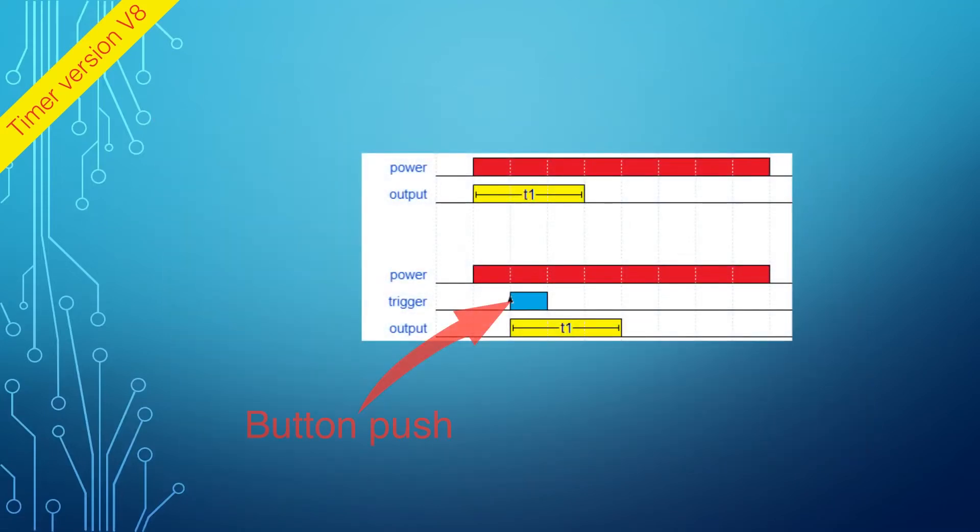For instance, the push of a button should activate the timer and power the LED for 10 minutes, and then automatically shut it off.